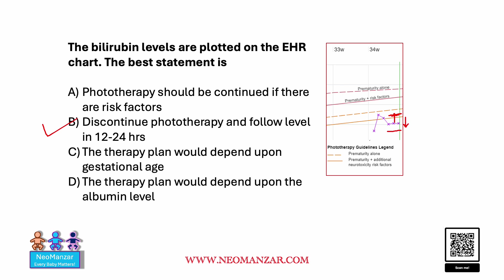The other point highlighted in this question is looking at the albumin level, because albumin level was not available. And this baby is already less than 35 weeks, while our guidelines provided by the American Academy of Pediatrics are for greater than 35 weeks. So this makes the case questionable. But because the EHR is already made keeping gestational age in mind, these curves are reliable.